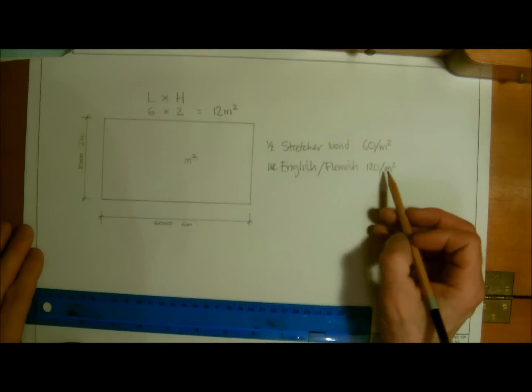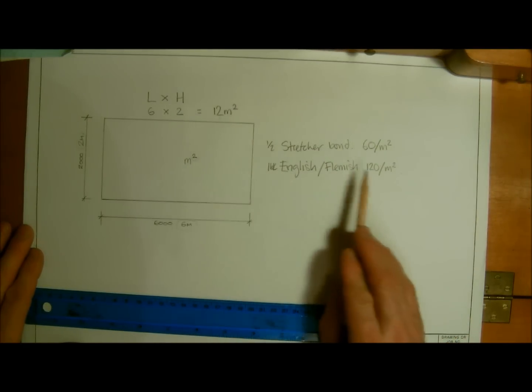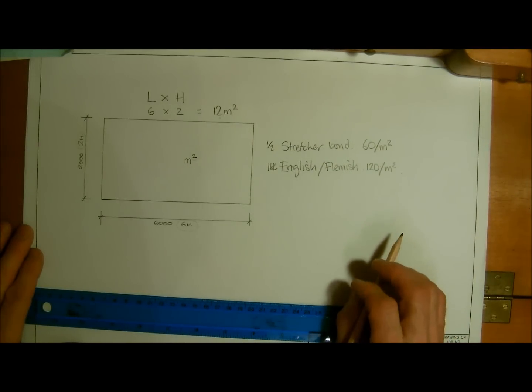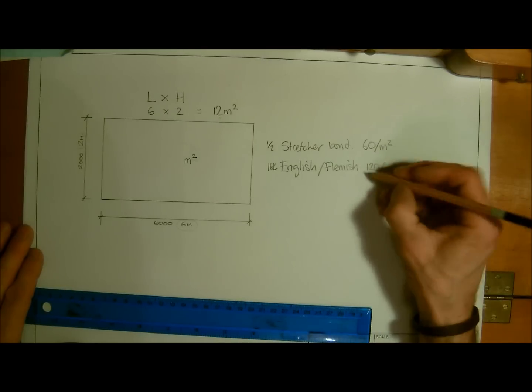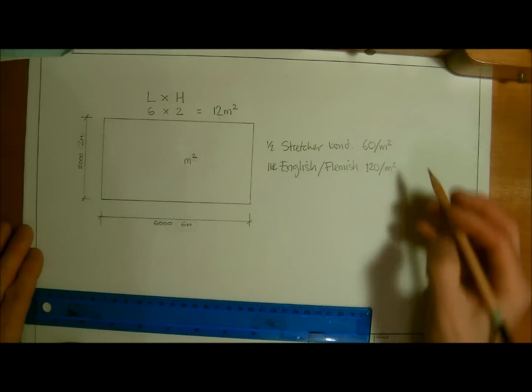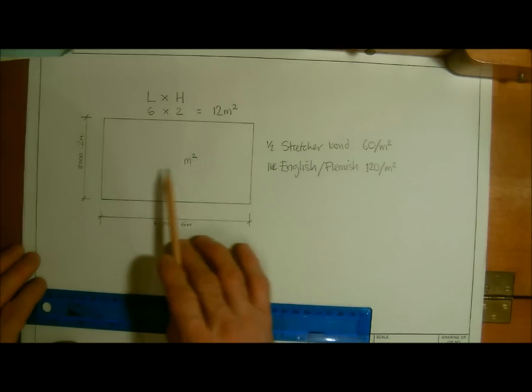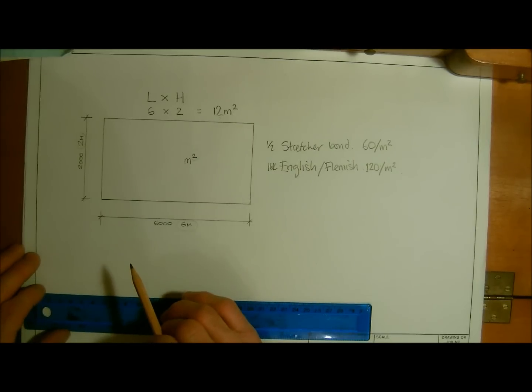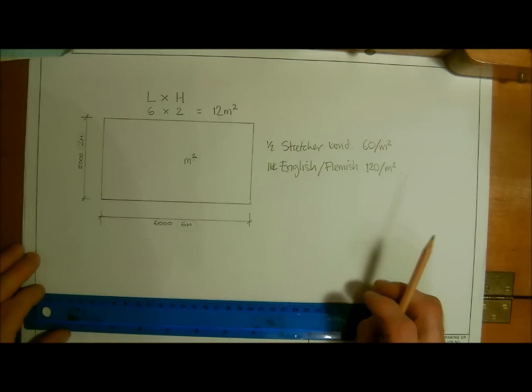Okay, and again if it was an English bond, we would have twelve times a hundred and twenty. And like I said, just with an easy calculation of that, we would come to the conclusion of that one. So that's just a straightforward way of working out our surface area.